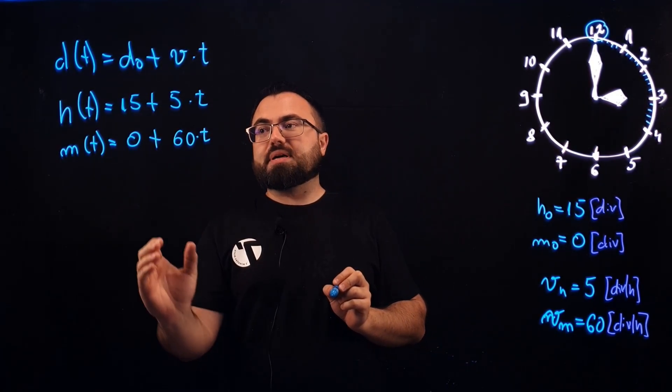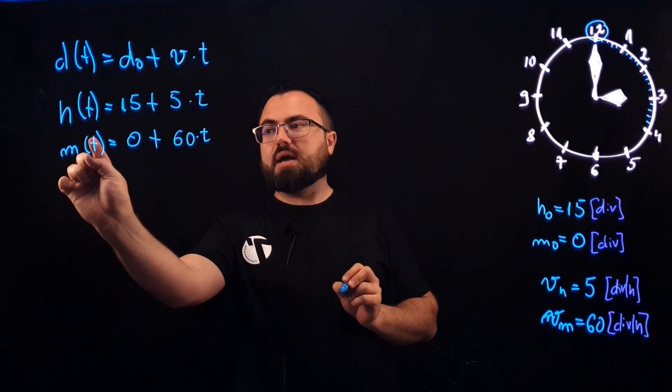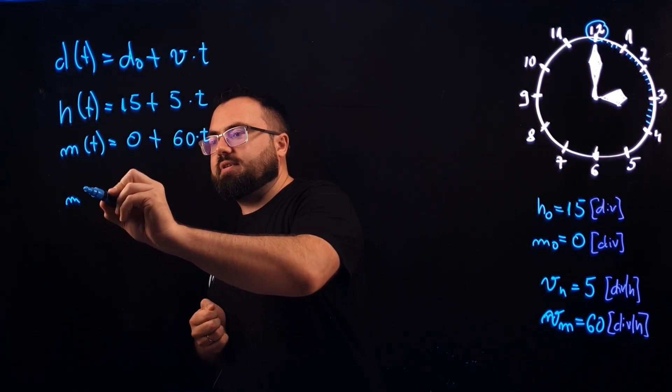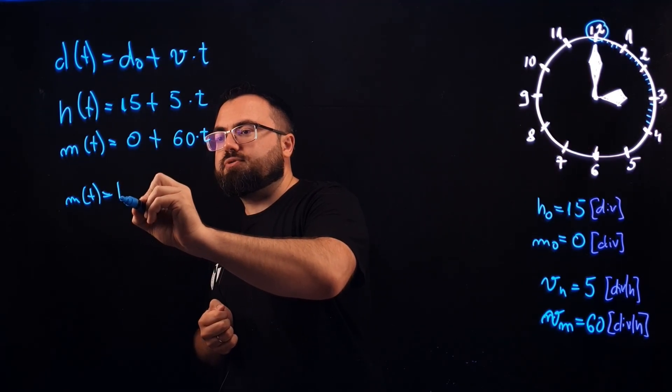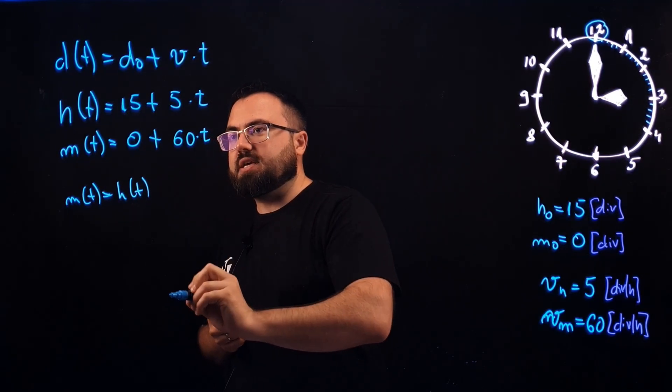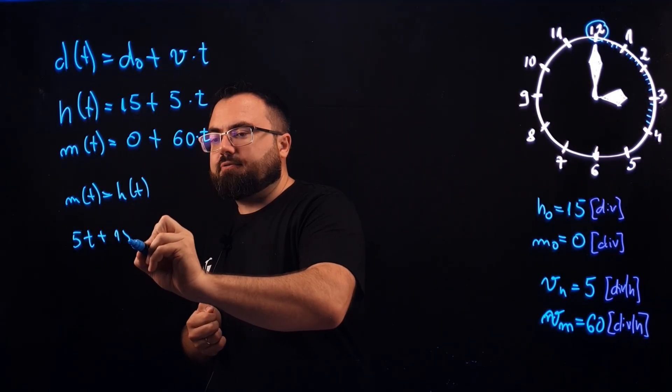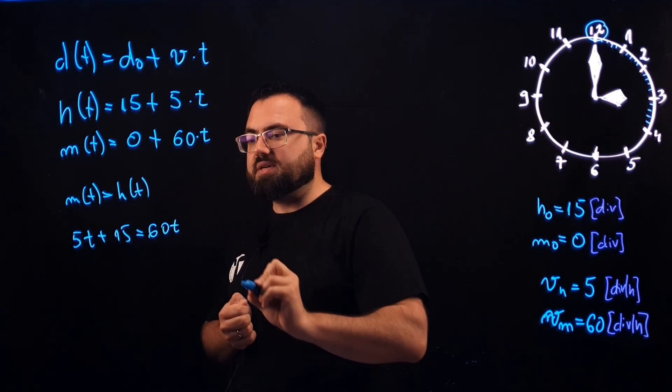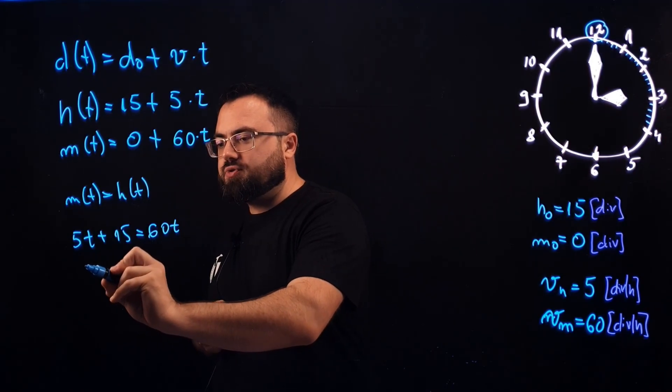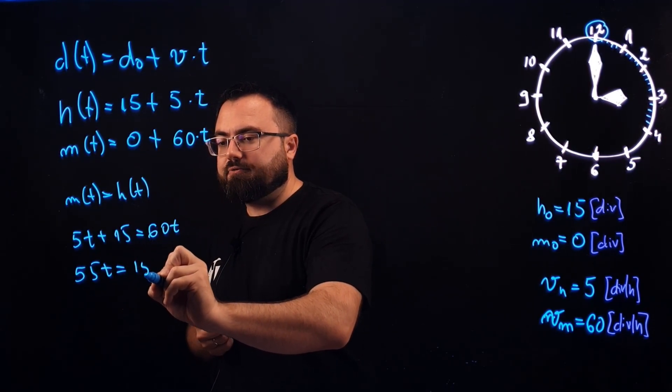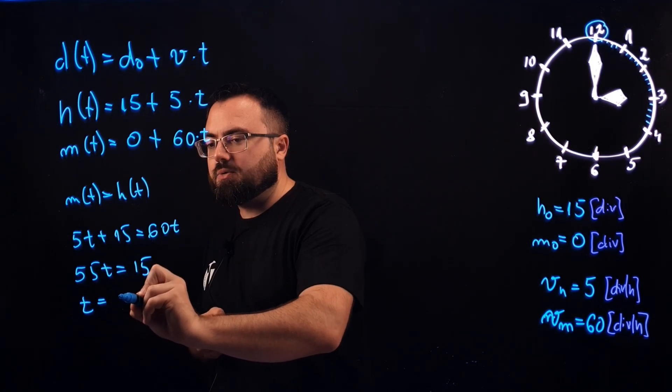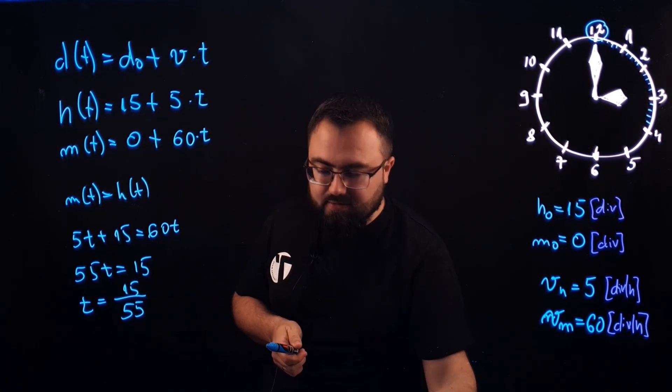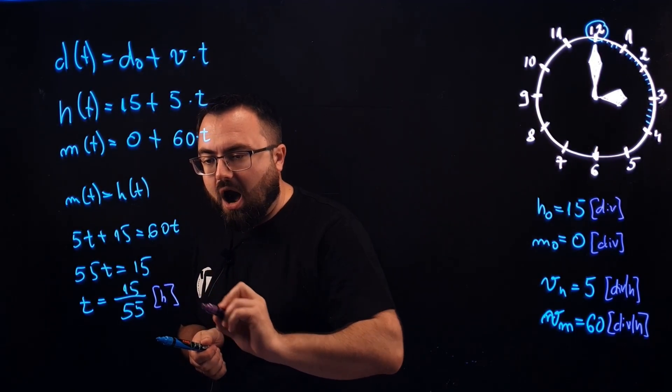What does an overlap mean? It means that when the hour hand and the minute hand are overlapped, the two will have the same value. That means that m(t) will equal h(t), and that means 5t plus 15 will equal 60t. When we solve this equation we have 55t equals 15, that is t equals 15 divided by 55, and the unit here is hour.